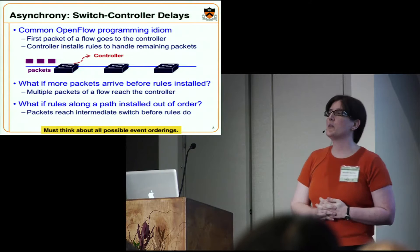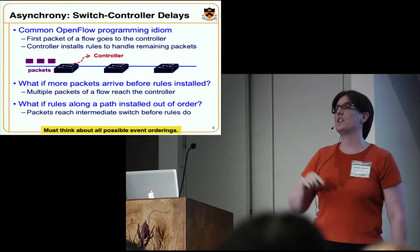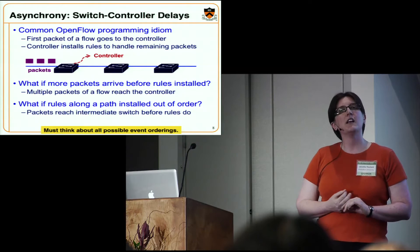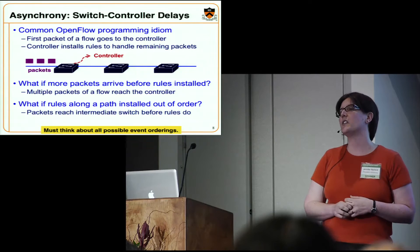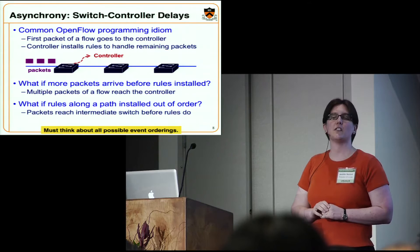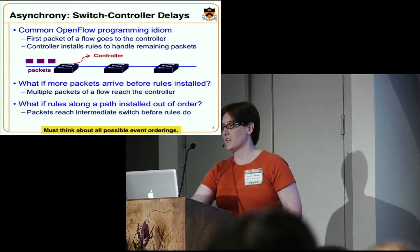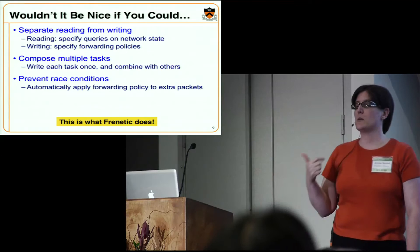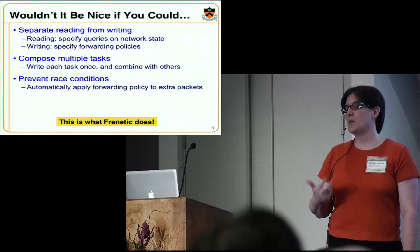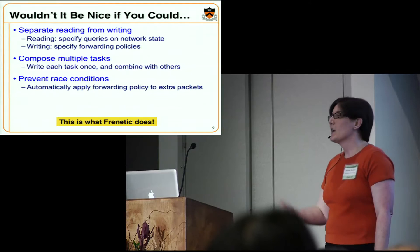We've been doing studies of simple OpenFlow applications, doing model checking to understand what kind of bugs people make. These two bugs occurred in quite a few programs because the program works correctly most of the time — it's just particular orderings of events, particular timings of packets, particular delays in talking to underlying switches where you see a problem. We would ideally like the programmer not to have to think about all these different event orderings. We'd like to separate reading from writing, compose multiple tasks together without rewriting them, and prevent race conditions by automatically applying the correct policy to packets that erroneously end up getting to the controller.